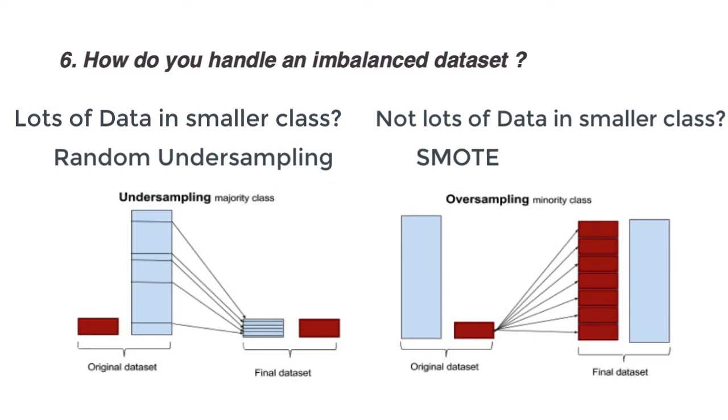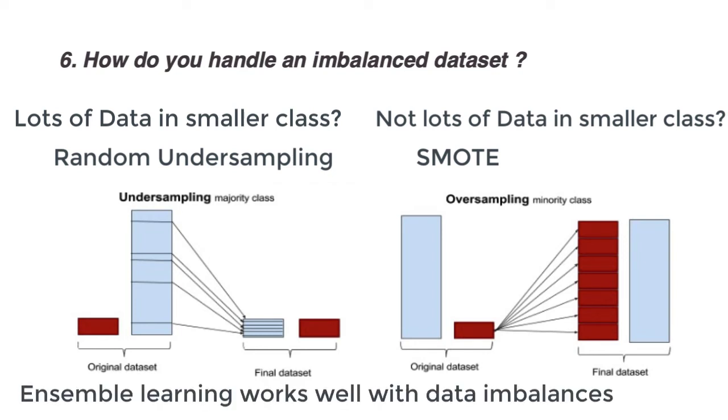Synthetic minority oversampling, or SMOTE, is a technique where we can synthesize new data with minor distortions of existing samples, rather than just copies. Ensemble learning algorithms tend to work well for data imbalances, typically boosting, bagging, and random forest techniques. Why? Aggregation tends to mitigate overfitting of a specific class.